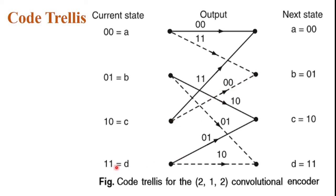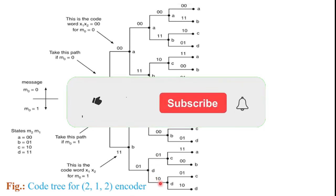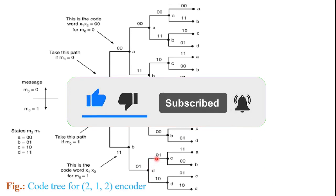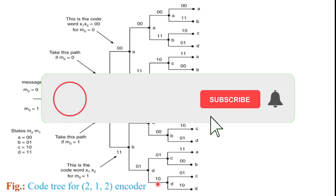The next state is D equal to 11. For state D, the outputs are 01 and 10. The output 01 is the M0 equal to 0 output, represented by the solid line, and the output 10 is the M0 equal to 1 output, represented by the dashed line.